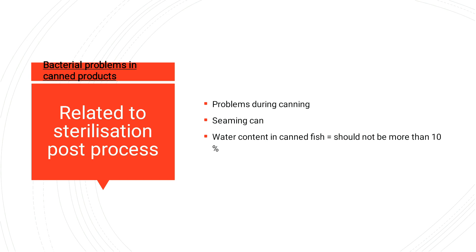Bacterial problems in canned food products are related to sterilization or post-process contamination during canning. When seafood is packed and canned, issues such as retort problems and seam defects can lead to bacterial contamination. Water content in canned fish can also lead to bacterial contamination, and it should be not more than 10 percent.